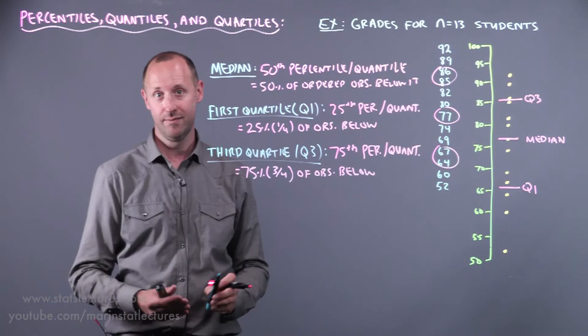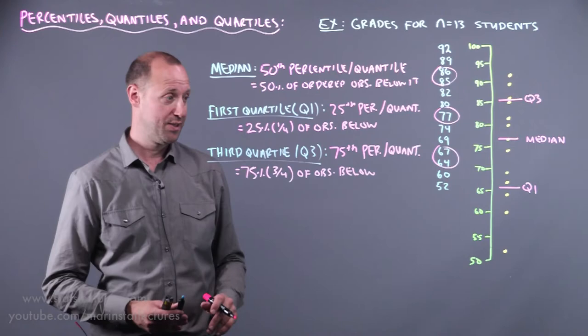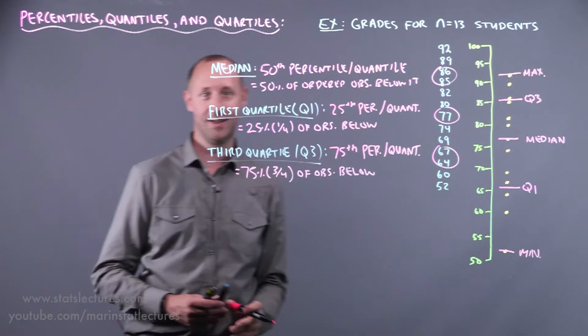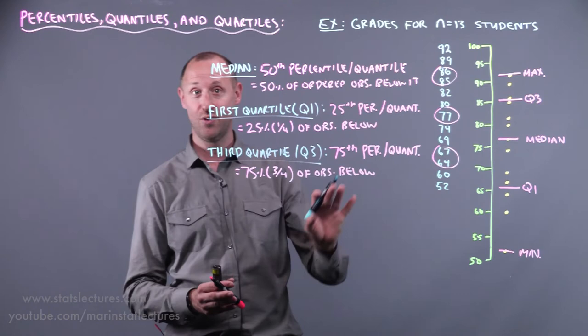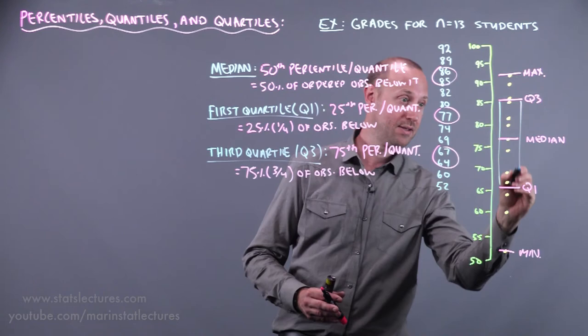Some other important points to mention are the minimum value as well as the maximum or the zero and the hundredth percentile. Now something encountered in a separate video but worth mentioning here is that the box plot is actually a visualization, a graphical visualization of the median first quartile, third quartile, minimum and max. So it draws a box on these and a line extending to those.